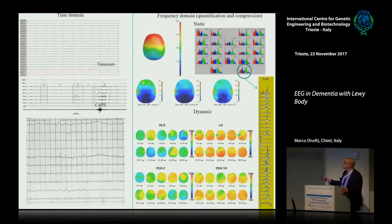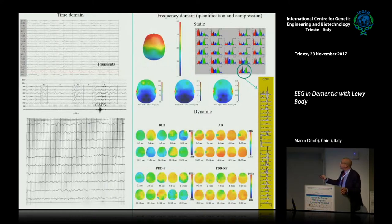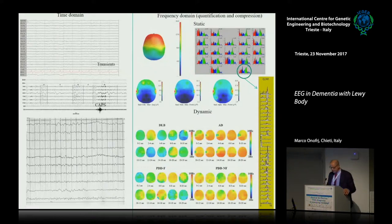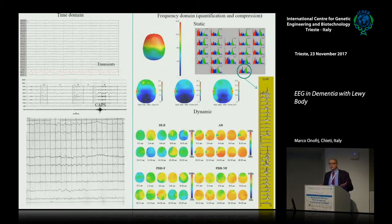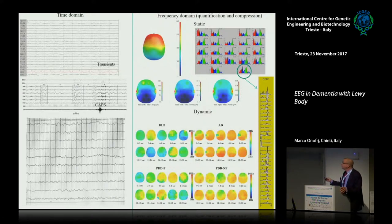In the frequency domain, you analyze which are the specific frequency bands: delta, theta, alpha, beta-gamma activity. Then you can observe the distribution on the scalp of the different bands - delta, theta and alpha. With this kind of static representation, you can quantify the activities, but you miss lots of information.